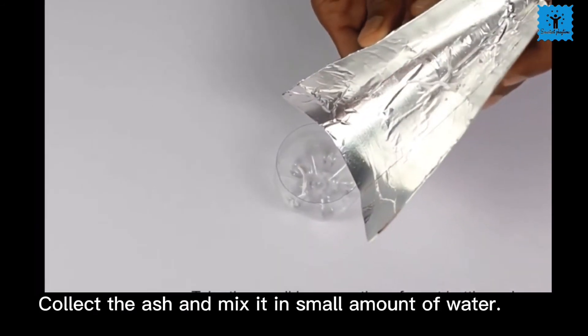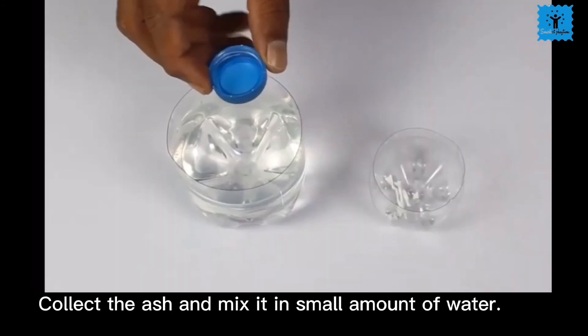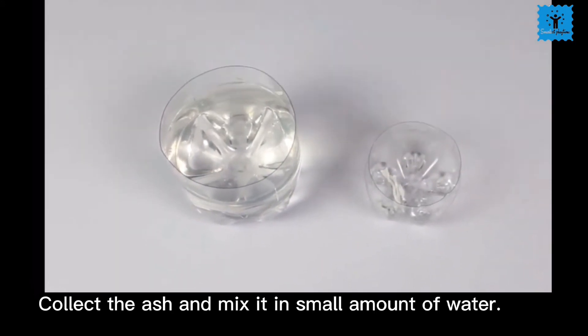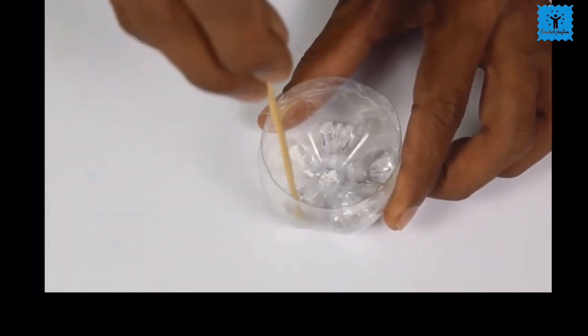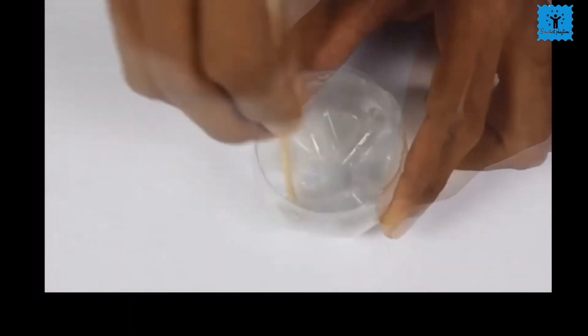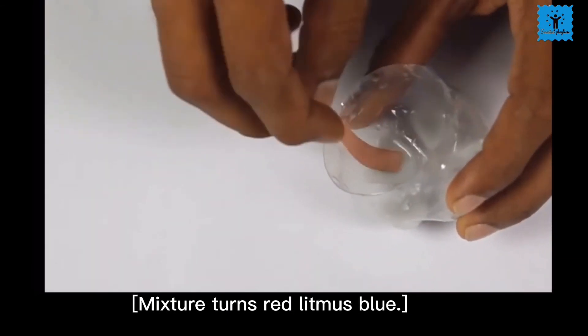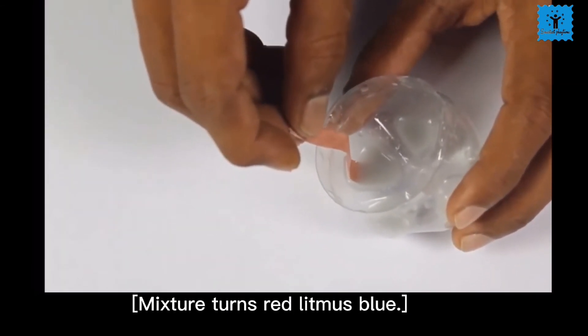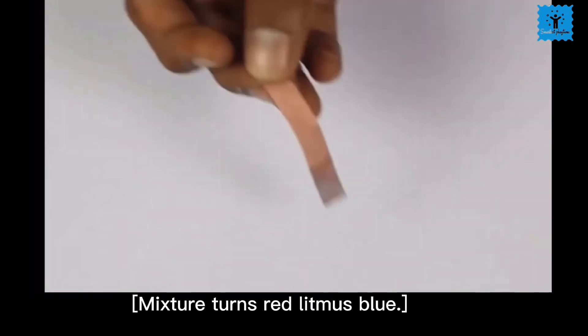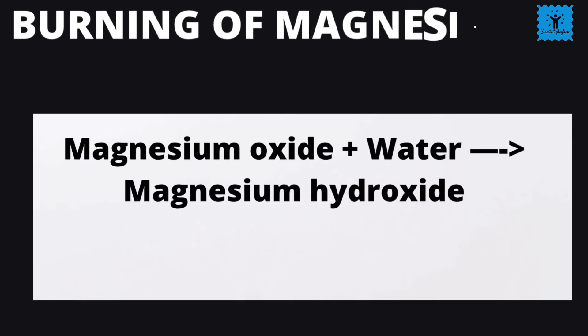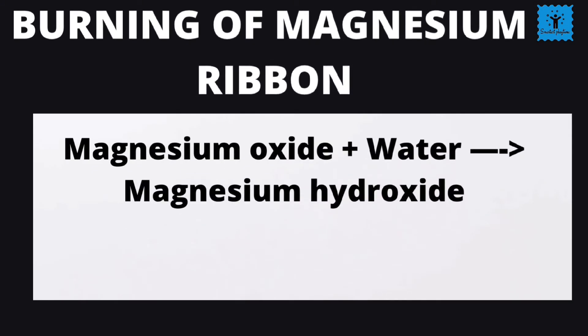Now collect the ash and mix it in a small amount of water. Stir the mixture well. Test the mixture with a red litmus paper. It turns red litmus paper into blue. It shows that this is a totally new substance which is a base. When we dissolve magnesium oxide in water, it forms a new substance which is magnesium hydroxide.